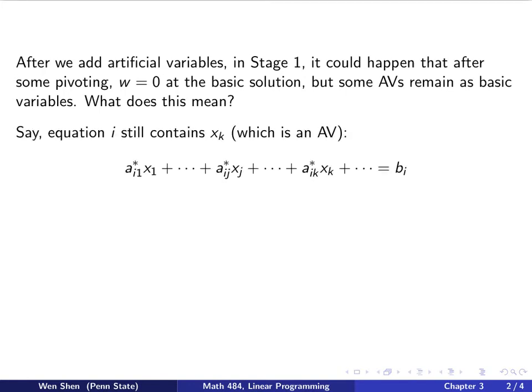Let's consider a situation such that equation number i still contains xk, which is an artificial variable, as a basic variable. Then I can write out the i-th equation as following. So here I put a star on the coefficient a to mean that is the coefficient at some pivoting step, not the original a. They're modified. So I'll have this equation, and in particular, I'll have this term, an xk.